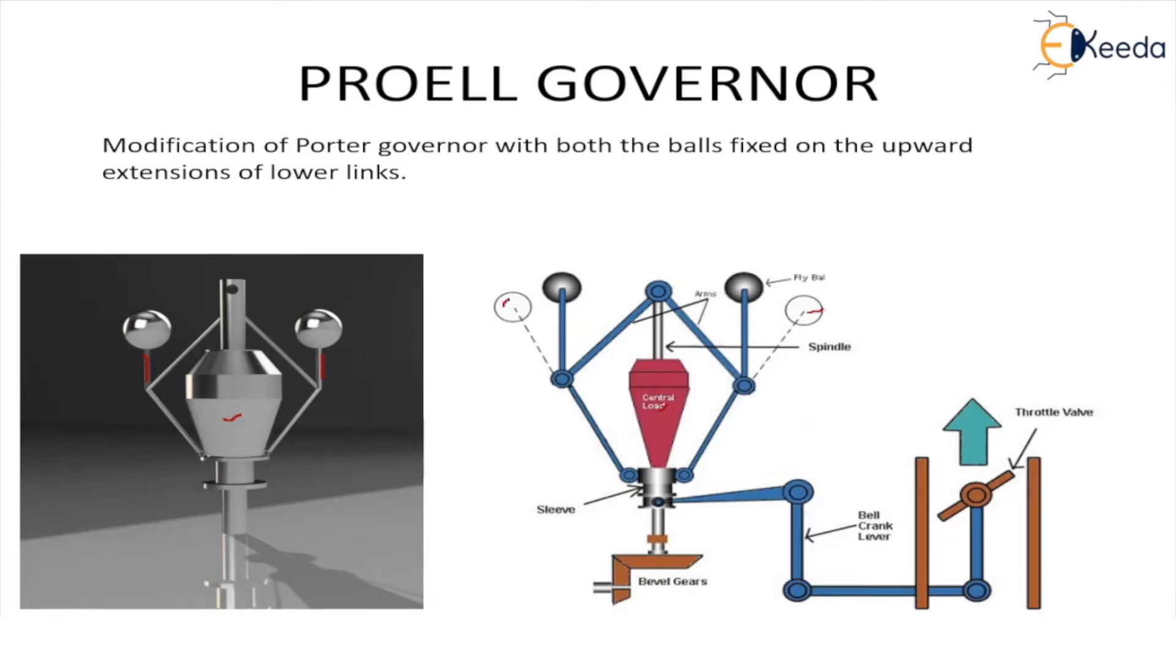They move outward which in turn reduces the fuel supply, it closes the throttle valve. Closes doesn't mean closes completely but closes as per the accordance. Hence, it reduces the supply of the fuel and the speed is brought to the equilibrium condition.